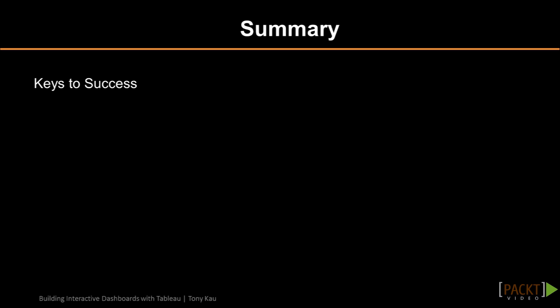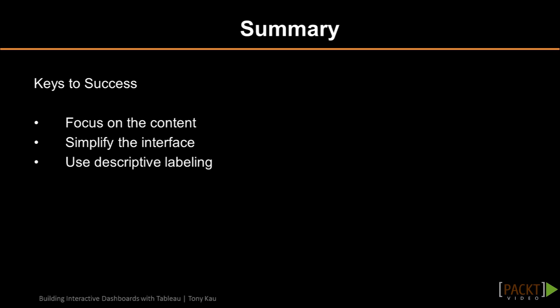To recap, we've set ourselves up for success by keeping in mind the key elements of an executive or strategic dashboard. Number one: focus on the content — don't flood the viewer with non-vital information. Number two: simplify the interface — if it has one at all, we need to make it foolproof without instructions to our user. Number three: use descriptive labeling — we want to essentially write a sentence with our key numbers to help the user quickly understand the information.